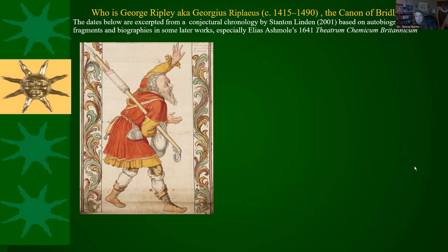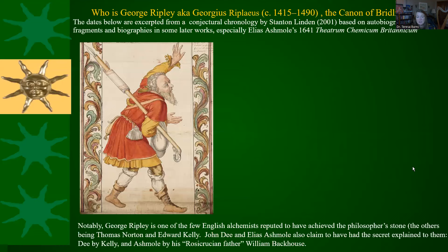Let's talk a little bit about Ripley's life, based on some work done by Stanton Linden. Ripley is one of the few English alchemists reputed to have achieved the Philosopher's Stone, the others being Thomas Norton and Edward Kelly. John Dee and Elias Ashmole say they've had the secret open to them — Dee says this in his diary right before he and Kelly part ways in 1589, and Ashmole says it in his diary, that his Rosicrucian father William Backhouse opened the secret of the Philosopher's Stone. But the three people who have actually done it are Ripley, Norton, and Kelly.